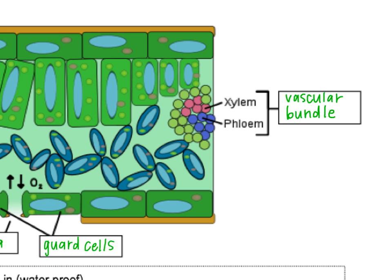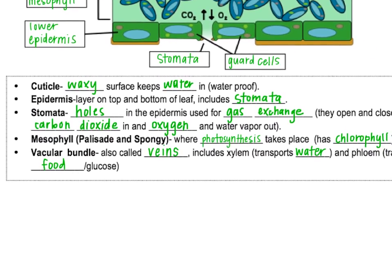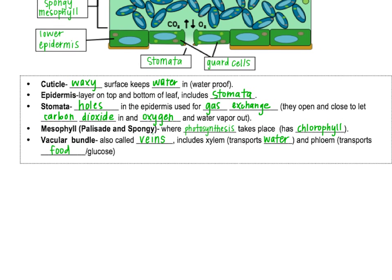Xylem moves the water and phloem moves the glucose or food. Looking at the purposes of each layer: the cuticle is a waxy layer that keeps water in and protects from water loss. The epidermis is on the top and bottom of the leaf and includes the stomata — those holes used for gas exchange to let carbon dioxide in and oxygen and water vapor out. The mesophyll — both palisade and spongy — is where photosynthesis takes place and where chlorophyll is most highly concentrated. The vascular bundle forms the veins of the leaf.